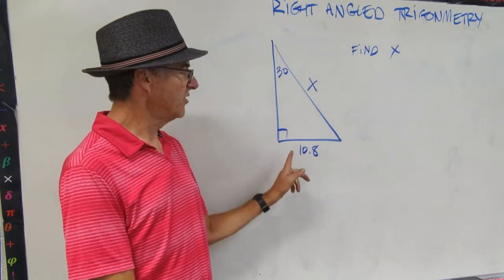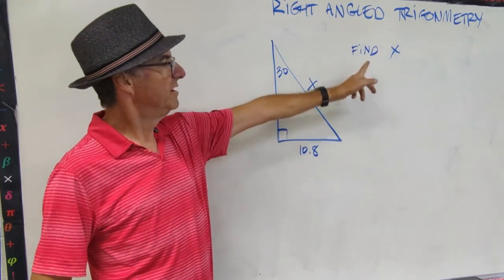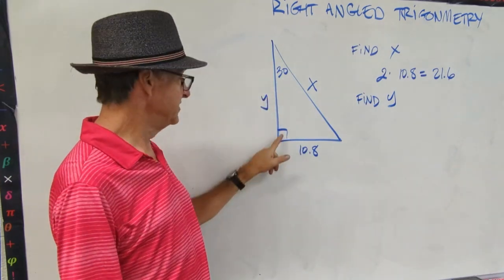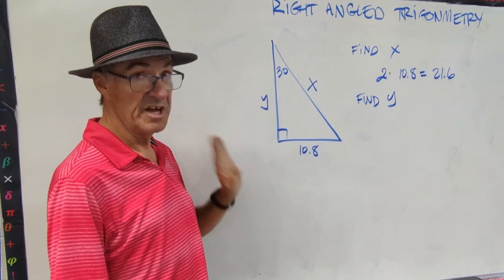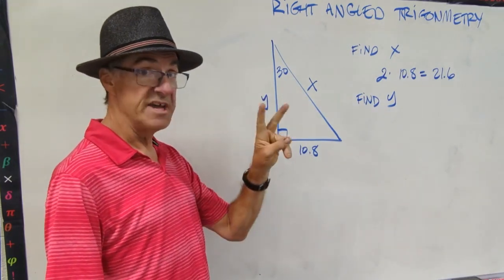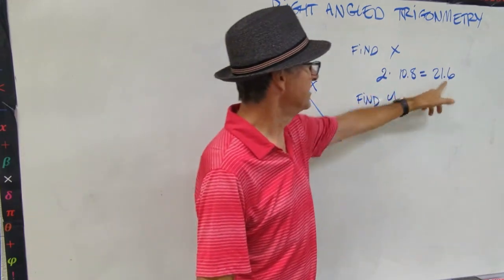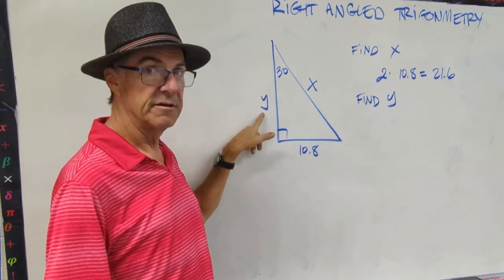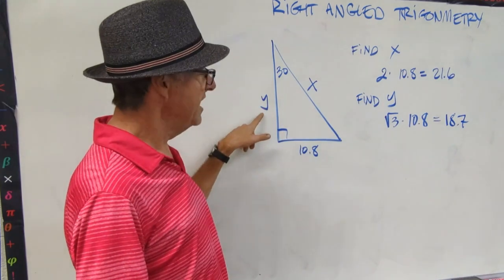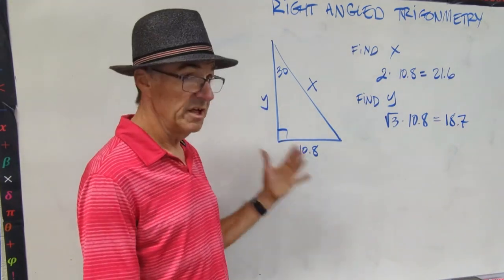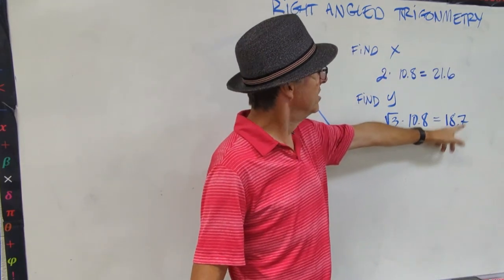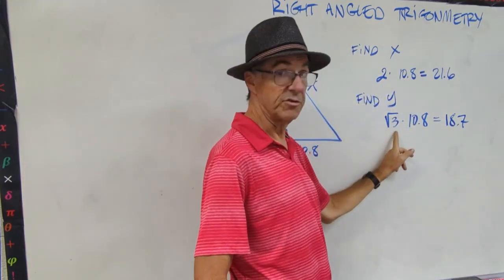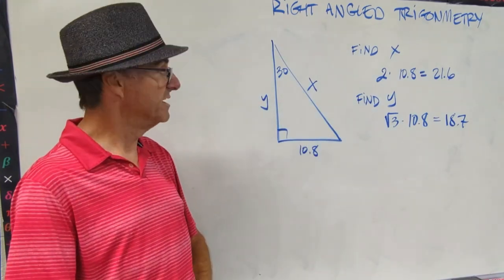Here's another triangle with sides and angles marked. Find X. Pause the video and do that. I recognize there's a 30 degree angle there — since that's 90, we know we have a 30-60-90 right triangle. The hypotenuse is twice the length of the shorter leg, so I just multiplied by 2 and got 21.6. Now pause the video and find the length of the longer leg, marked Y. The longer leg is root 3 times the shorter leg — root 3 times 10.8 gives 18.7. These are decimal approximations since we have root 3 in there, but it didn't say find exactly, so we're not worried about rounding.